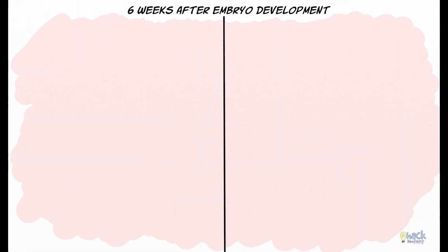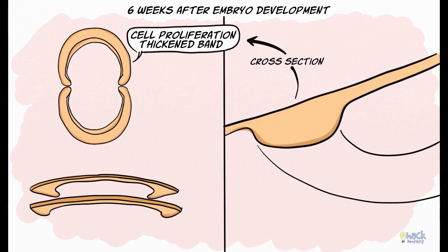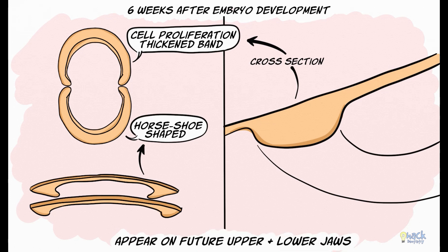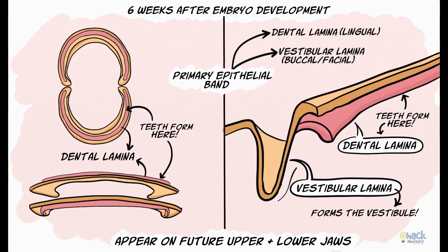After about six weeks of development of the embryo, a proliferation of cells in the form of a thickened band appears in the presumptive or developing upper and lower jaws. The bands are horseshoe-shaped and correspond to the position of the future upper and lower jaws. This thick band of proliferation is called the primary epithelial band, and this epithelial band bifurcates into a lingual process called the dental lamina and a buccal or facial process called the vestibular lamina. It is on the dental lamina that the teeth will form, and the vestibular lamina will eventually give rise to the oral vestibule between the teeth and the cheeks.